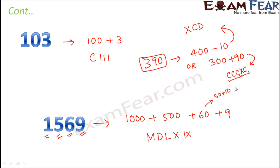So do you think we can write it like this? We can't, because as per the last rule we learned, X can occur before L or V only. It cannot occur before C and D. So this is not the right way. So the right way of writing 390 is XCD.